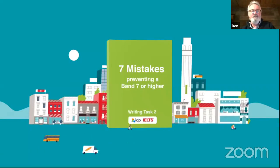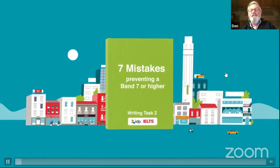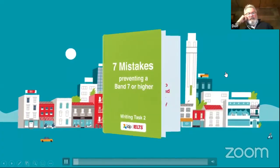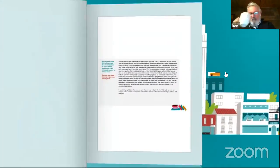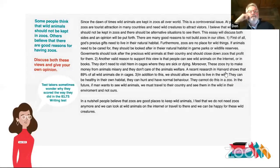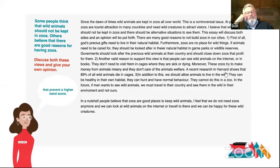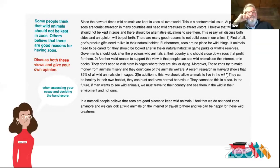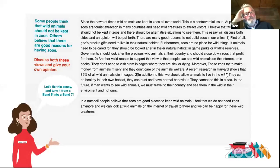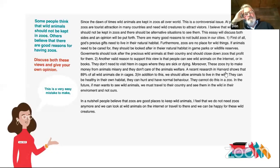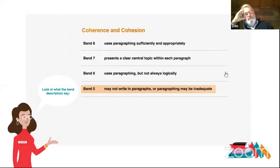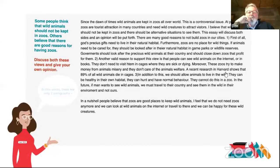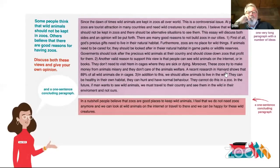Hey IELTS test takers. We're here today to tell you about seven mistakes that could be preventing you from scoring a band 7 or higher in IELTS writing task 2. Test takers sometimes wonder why they scored the way they did and become frustrated with their writing band score. We are going to show you seven mistakes that prevent a higher band score, and also show you the features the examiner looks at when assessing your essay. Let's fix this essay and turn it from a band 5 into a band 7. Mistake number one: not enough paragraphs — a very easy but very costly mistake.